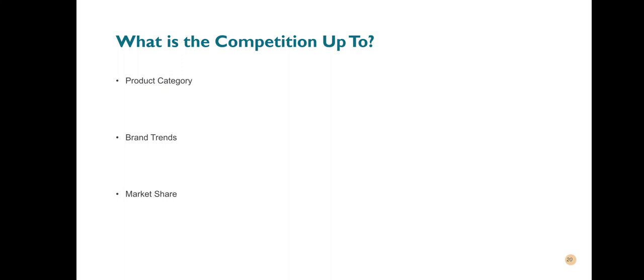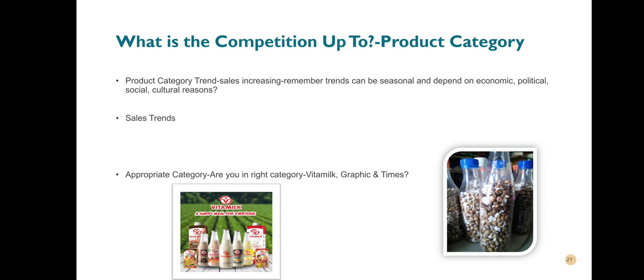Let's look at what product category is about. Under product category, we're looking at product category trends, sales trends, and whether you're in the appropriate category. By product category trend, we mean your product — your brand, whatever it is you're selling — falls into a certain category, just like on Jiji or Tonaton where they have categories like vehicles, furniture, and so on.